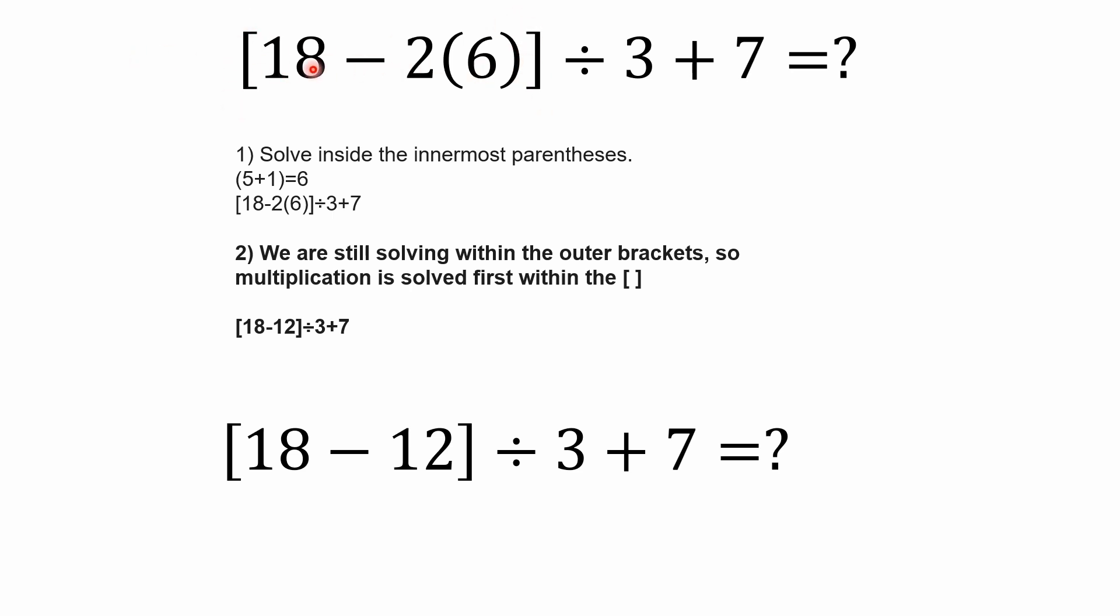Parentheses and brackets are nothing more than grouping symbols. And what they tell us is that we need to follow the order of operations inside of those parentheses or brackets. We're looking at what is within these two brackets here. And we follow the order of operations. We don't have any other parentheses. But this is also multiplication. So we don't have any exponents. We have multiplication. So within these outer brackets, we're solving multiplication first. Two times six is 12.